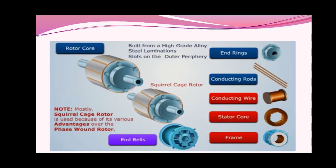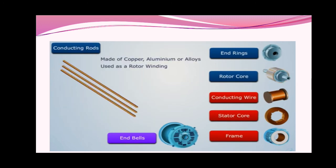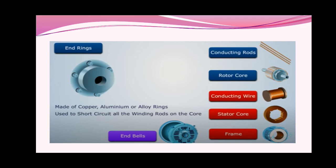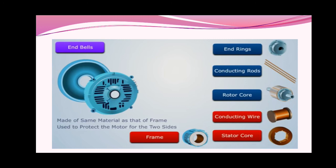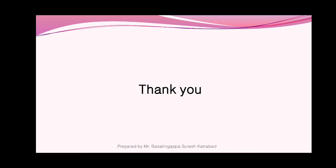Next, the rotor: the rotor core is built from high-grade alloy steel laminations, slotted on the outer periphery — in the stator it is the inner periphery, but in the rotor it is the outer periphery. Most squirrel cage rotors are used because of various advantages, or the phase-wound rotor. Conducting rods made of copper, aluminum, or alloy are used as rotor winding. End rings made of copper, aluminum, or alloy are used to short-circuit all the winding rods on the core. End shields are made of the same material as the frame and are used to protect the motor on the two sides. Thank you.